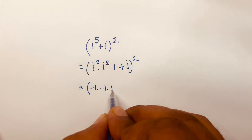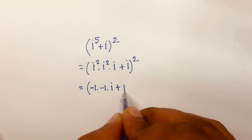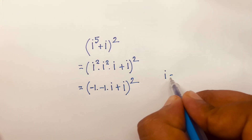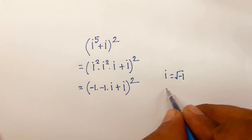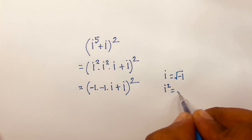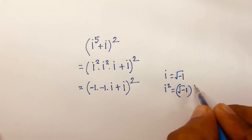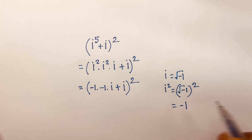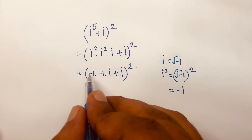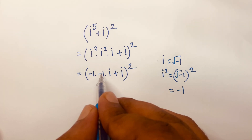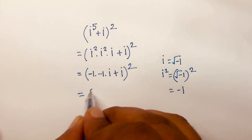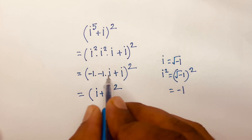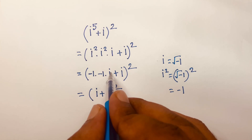We know that i equals square root of negative 1, and i squared equals the square root of negative 1 to the power 2, so the square root cancels and gives negative 1. Therefore negative 1 times negative 1 is positive 1, times i gives us i. So the first term simplifies to i, and we have i plus i inside the bracket to the power 2.